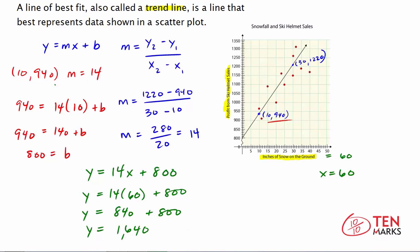That means y = 1640. That means if snow falls to 60 inches, if we have 60 inches of snow on the ground, then we're estimated to have about $1640 in profit.